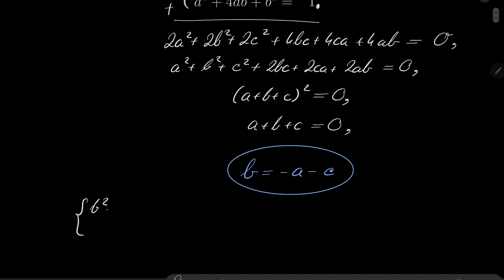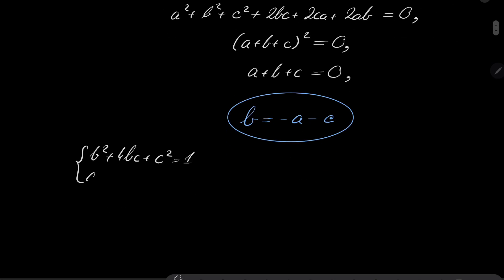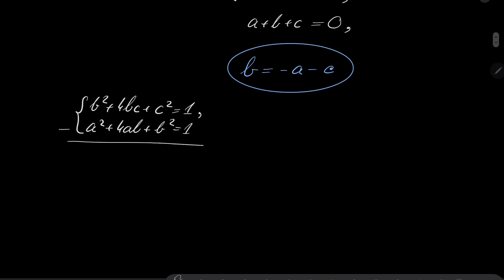We have b² + 4bc + c² = 1 and we have also a² + 4ab + b² = 1. And what I will do now, I will take these equations and I will actually subtract them.